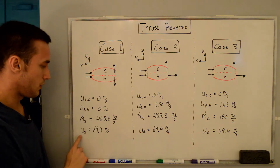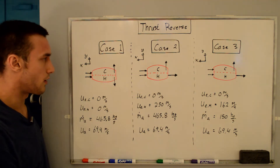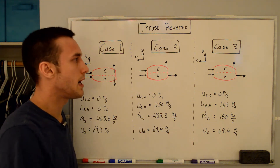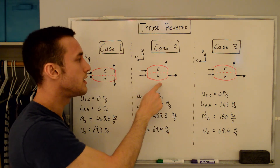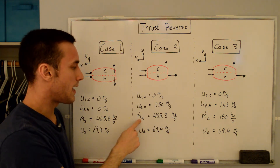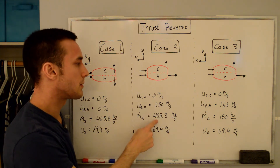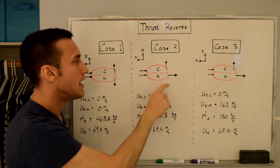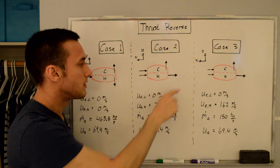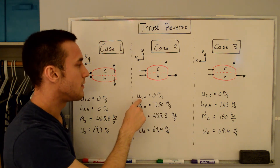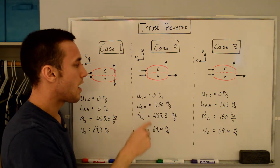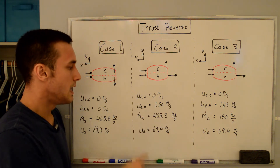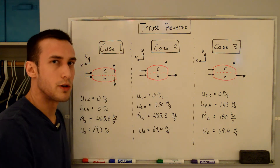Most turbofans don't actually deflect the core or hot flow — they only deflect the bypass flow, which is what we're doing in case two. We're still at full thrust, so M_A equals 465.8 kg/s, but now we're only deflecting the bypass or cold flow 90 degrees, leaving the hot flow undisturbed through the engine. The exit velocity of the cold flow is zero m/s, but the exit velocity of the hot stream is 250 m/s, at a flight speed of 69.4 m/s.